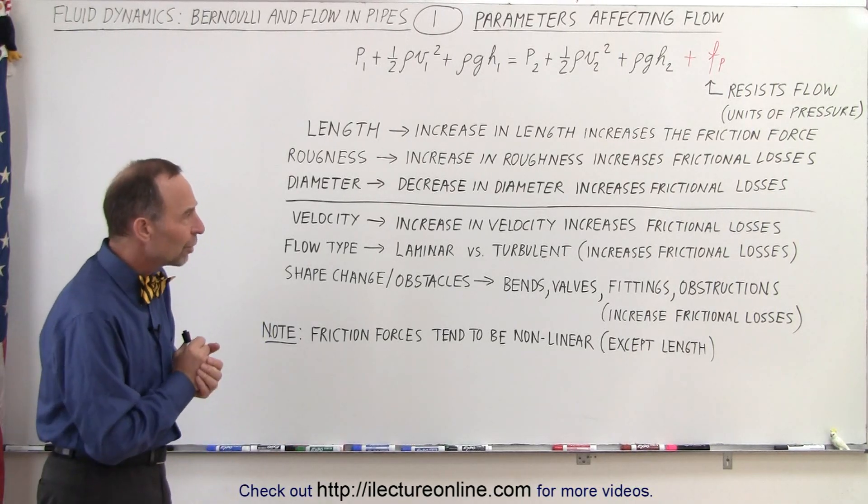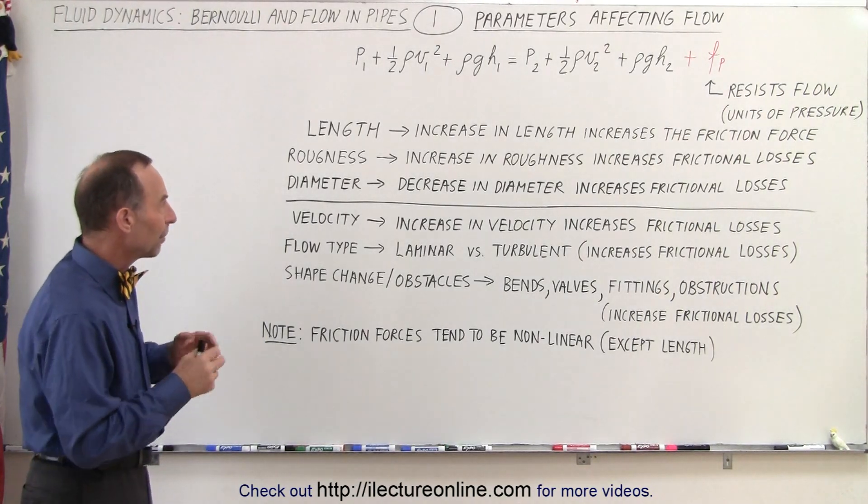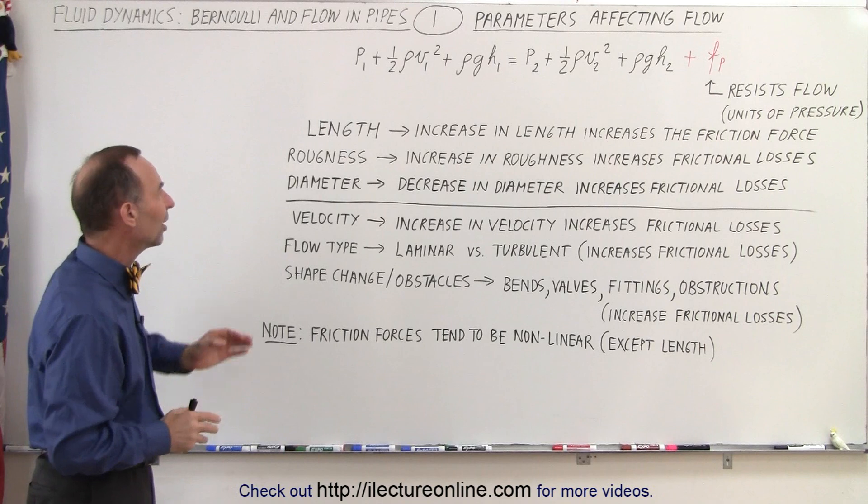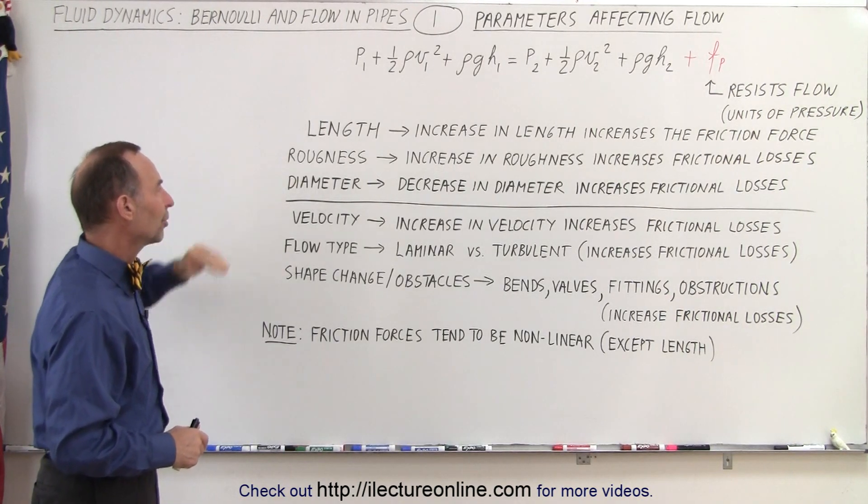In this video, we're going to consider the kind of things that oppose fluid flow. For example, specific to the pipe itself, the first three are the length of the pipe, the roughness of the pipe, and the diameter of the pipe.